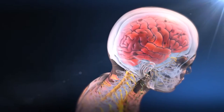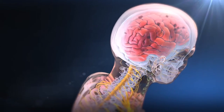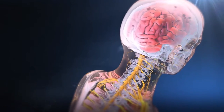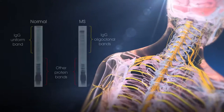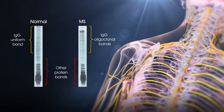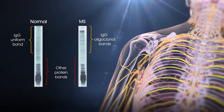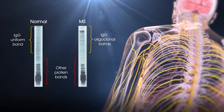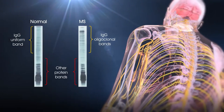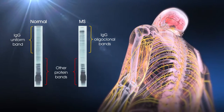Clonally related B-cells exist in the brain, meninges and CSF in people with MS, and are also responsible for synthesis of the characteristic oligoclonal antibody bands characteristic of MS.